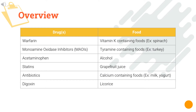Here is a quick overview of the drug-food interactions we will be discussing: warfarin and vitamin K-containing foods, monoamine oxidase inhibitors and tyramine-containing foods, acetaminophen and alcohol, statins and grapefruit juice, antibiotics and calcium-containing foods, and digoxin and licorice.